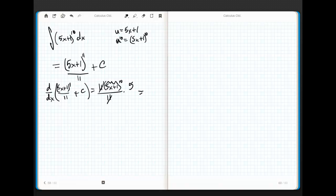These cancel, and what do I end up with? 5 times 5x plus 1 to the 10th. I'm off by a factor of 5. When I took the derivative of what I thought was the integral, I'm off by a factor of 5.